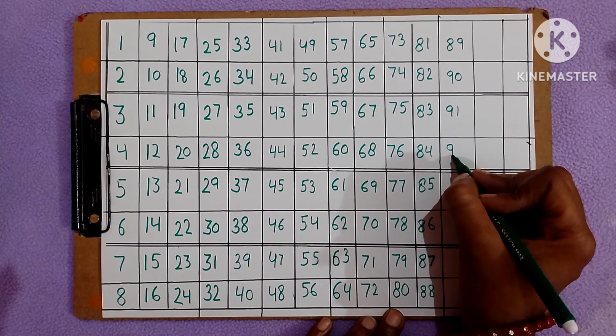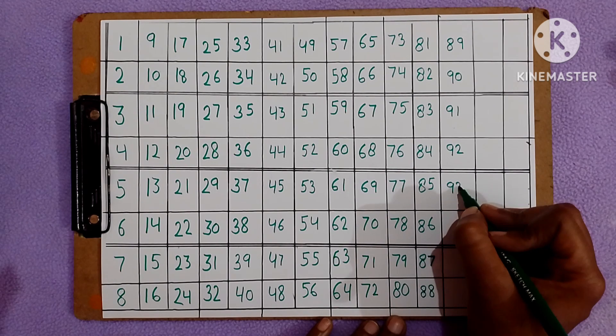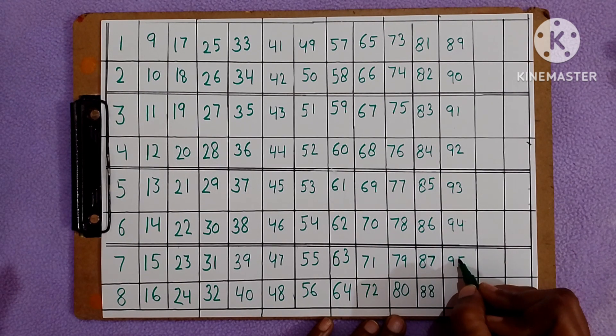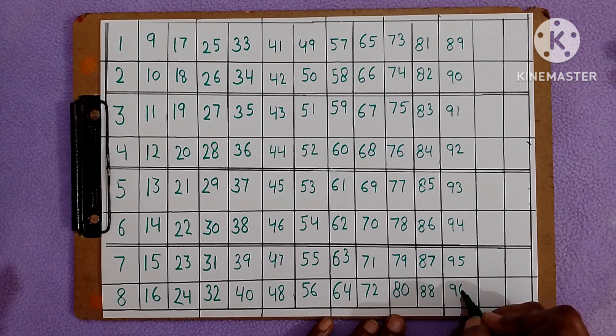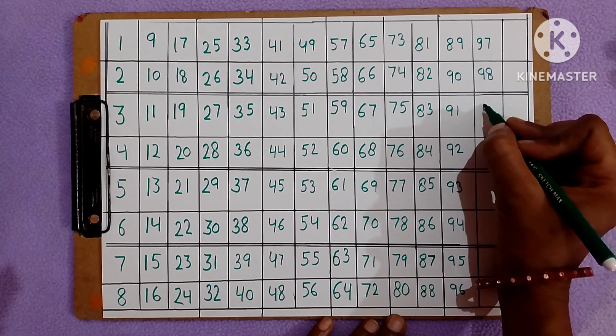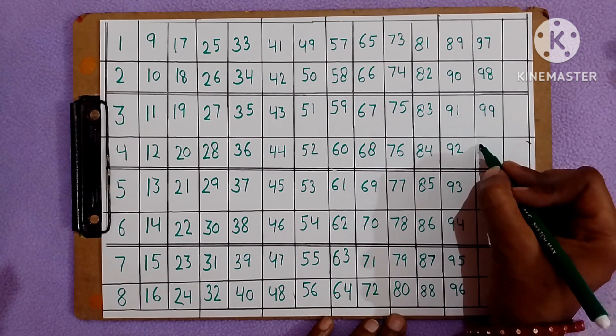Ninety-two, ninety-three, ninety-four, ninety-five, ninety-six, ninety-seven, ninety-eight, ninety-nine, one hundred.